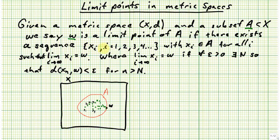so for each of the integers I could put I in the natural numbers, with each of those points in A, such that the limit of that sequence of points is equal to W.